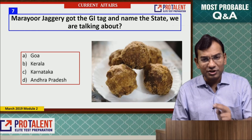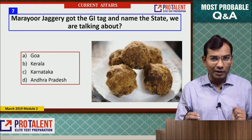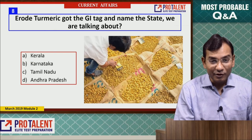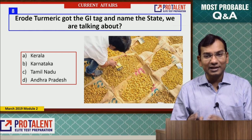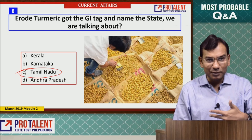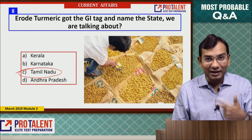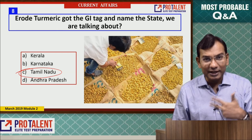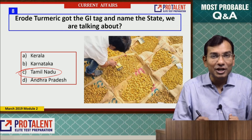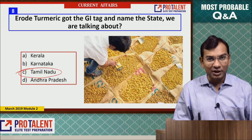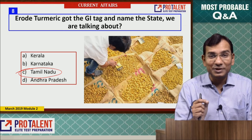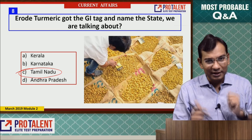Question 7: Marayur Jaggery got a GI tag — it is from Kerala. Question 8: Erode Turmeric also got a GI tag — it is from Tamil Nadu. To summarize: Karnataka has Sirsi Supari, Kerala has Marayur Jaggery, Tamil Nadu has Erode Turmeric. Remember, GI tags are given to both man-made and natural items — for example, Darjeeling Tea (natural) and Odisha's Rasagulla (man-made).